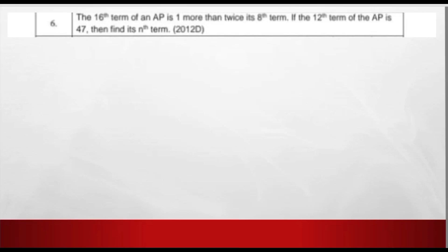Question number 6: the 16th term of an AP is 1 more than twice its 8th term. If the 12th term of the AP is 47, then find its nth term. In this question, we are given the 16th term of the AP in terms of the 8th term, and also given that the 12th term is 47. We have to find the nth term of the AP.